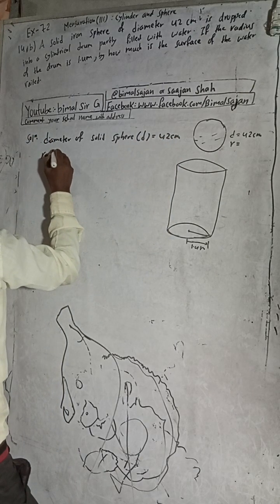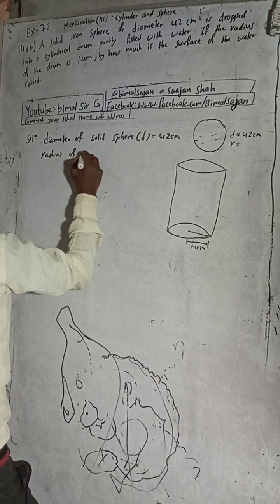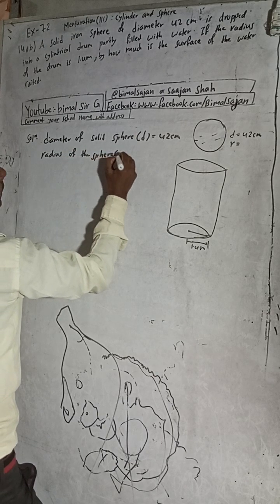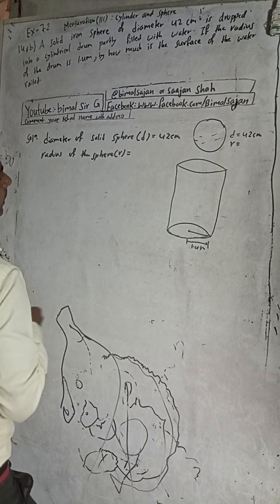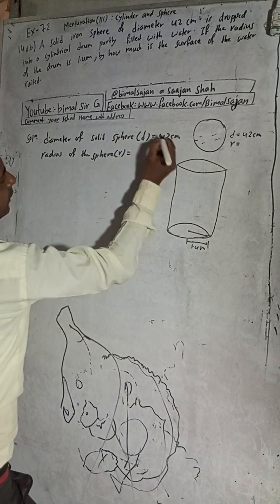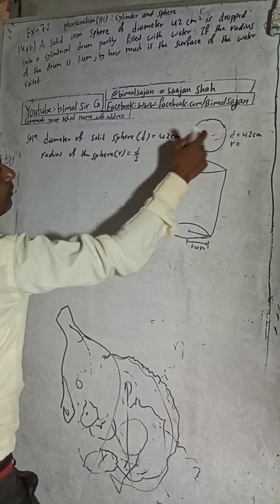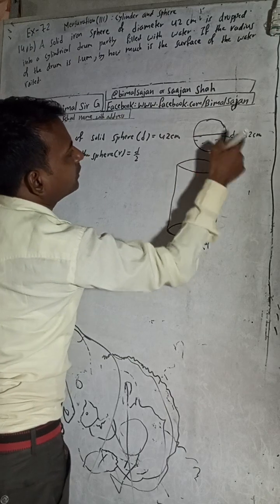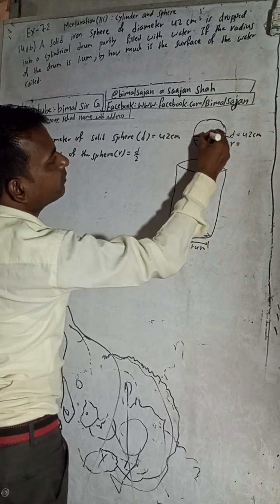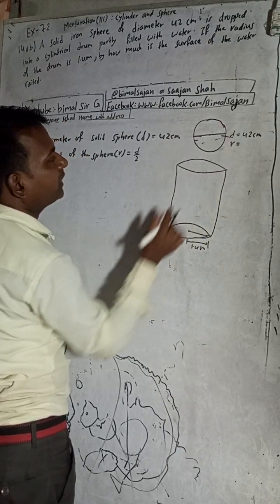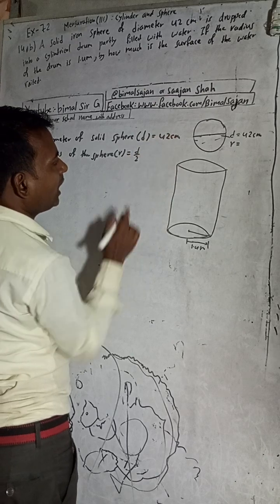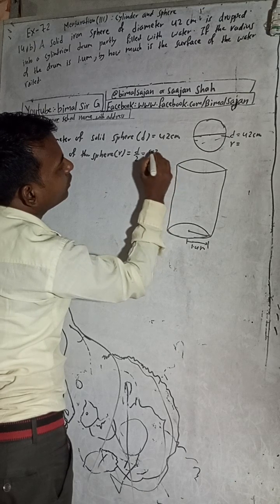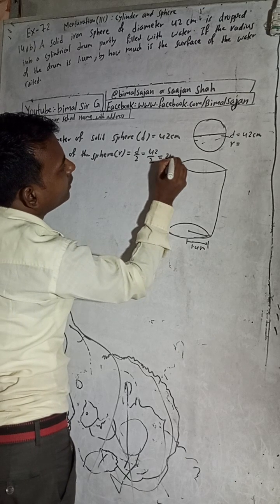Radius of the solid sphere: r is equal to d by 2. Diameter means half — from one side to the other is diameter, and half of that is called radius. So diameter divided by 2 gives us 42 by 2, which is equal to 21 cm.